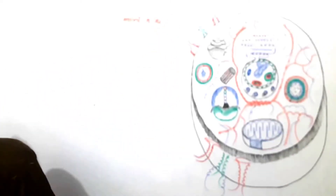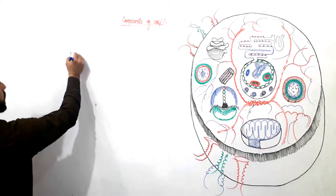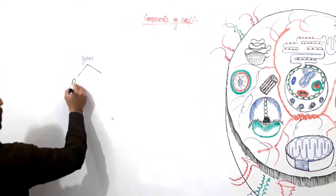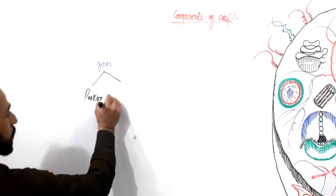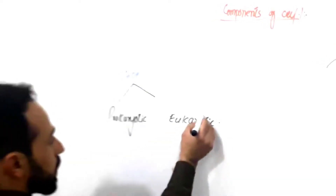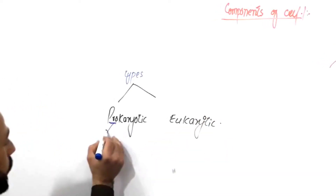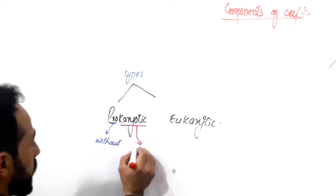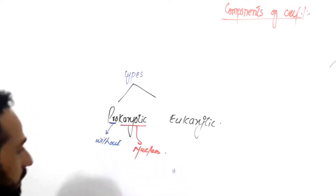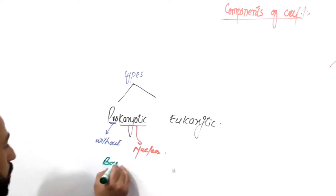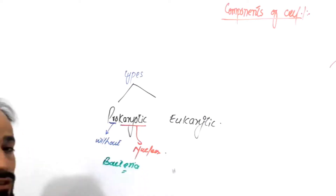First, let me write the components of the cell. There are two types of cells. The first is prokaryotic and the second is eukaryotic. The word 'pro' means without, and 'karyon' means nucleus. So those cells which do not possess a nucleus are called prokaryotic cells. For example, bacteria — a cell which does not possess a nucleus.